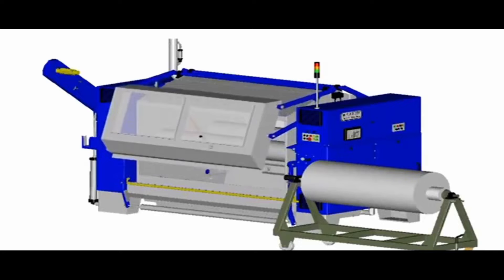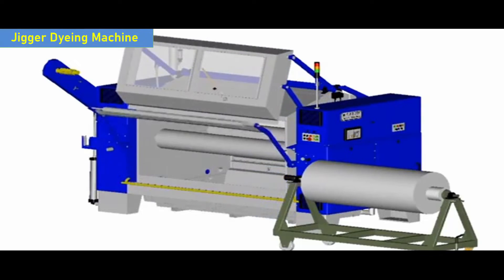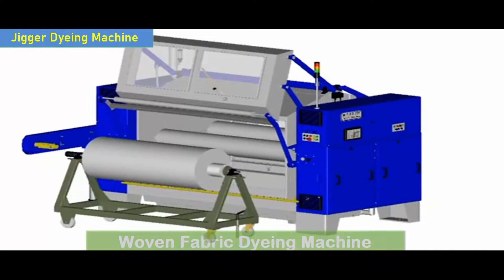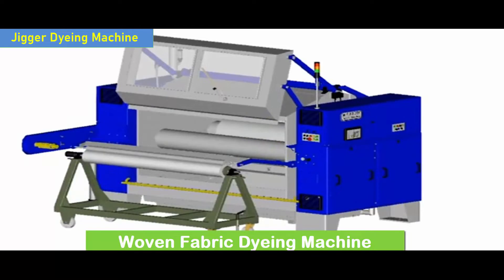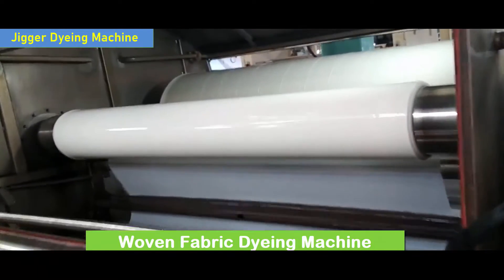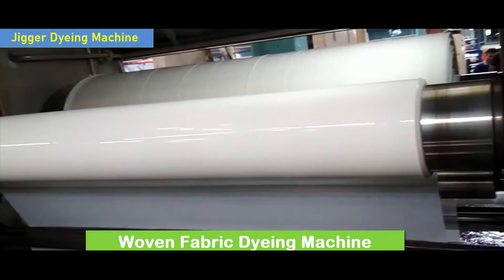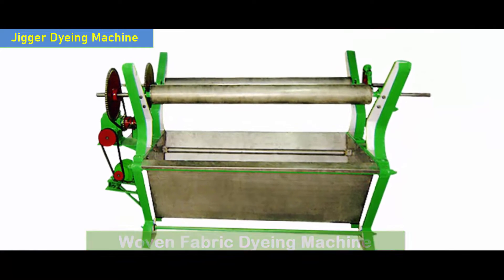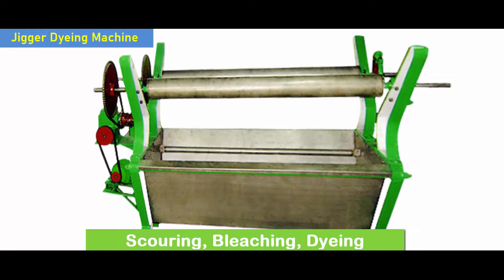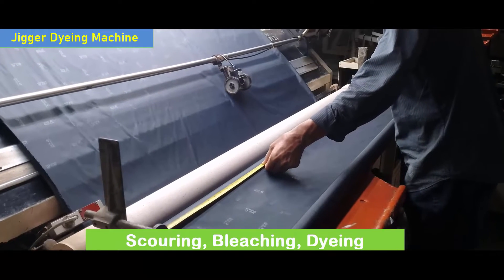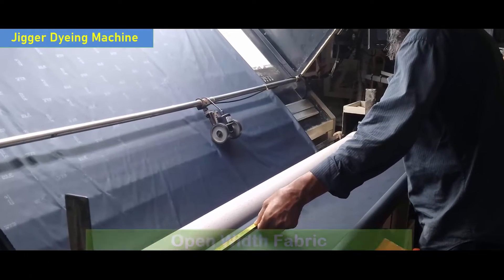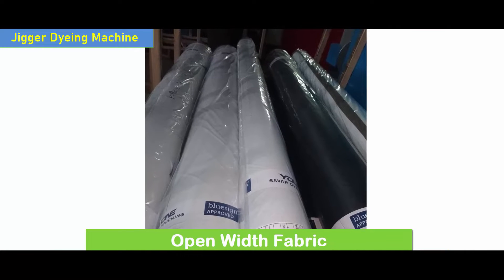The Jigar Dyeing Machine is a fabric dyeing machine that has been used for a long time for the dyeing of woven fabric. The squaring, bleaching, and dyeing in the full width form are carried out by the Jigar dyeing machine.